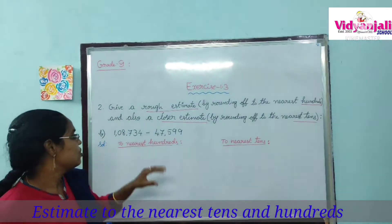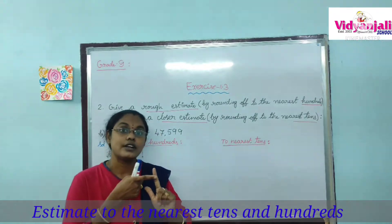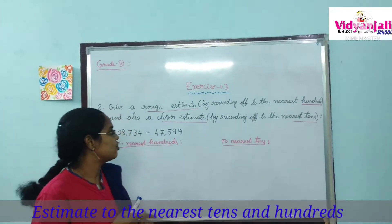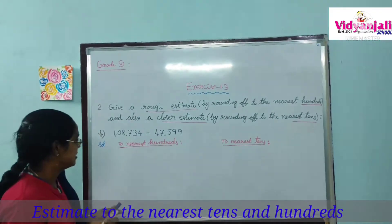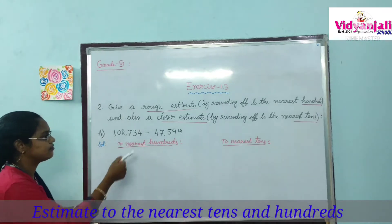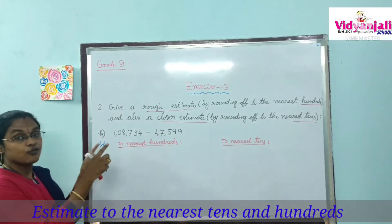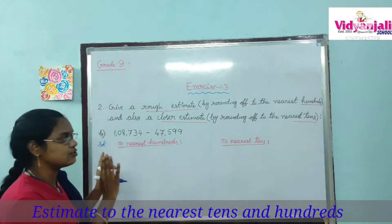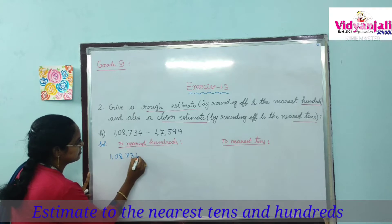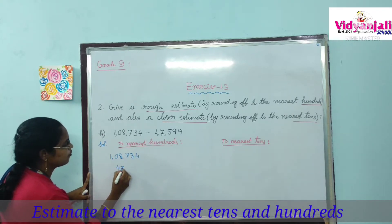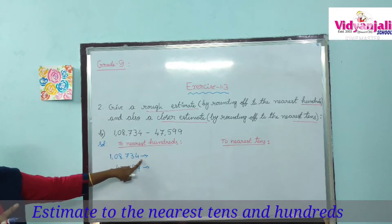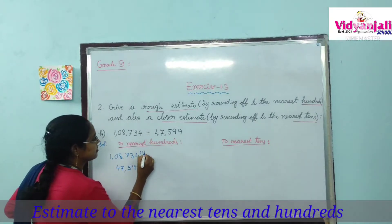So rounding off to the hundreds is called rough estimate, and rounding off to the nearest tens is called closure estimate. In this question we have to round off the given numbers to both hundreds and tens. The numbers are 1,08,734 minus 47,599. First let us round off to the hundreds place — that means rough estimate.